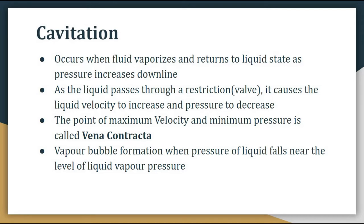Whenever a liquid passes through a restriction, its velocity increases, and with increasing velocity, pressure decreases. The point of maximum velocity and minimum pressure is called the vena contracta — it is the point beyond which velocity cannot increase further or pressure decrease further. Maximum velocity and minimum pressure occur at the vena contracta.